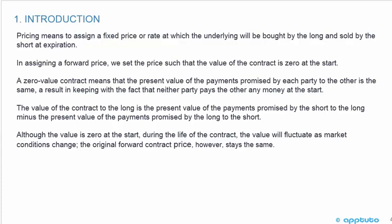Pricing means to assign a fixed price or rate at which the underlying will be bought by the long and sold by the short at expiration. In assigning a forward price, we set the price such that the value of the contract is zero at the start. A zero value contract means that the present value of the payments promised by each party to the other is the same, a result in keeping with the fact that neither party pays the other any money at the start. The value of the contract to the long is the present value of the payments promised by the short to the long minus the present value of the payments promised by the long to the short. Although the value is zero at the start, during the life of the contract the value will fluctuate as market conditions change, while the original forward contract price stays the same.